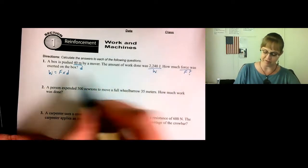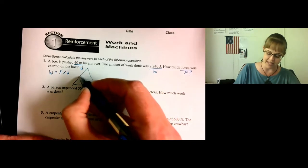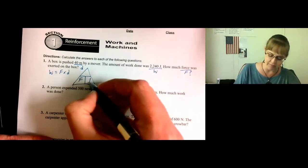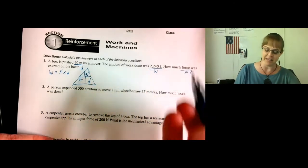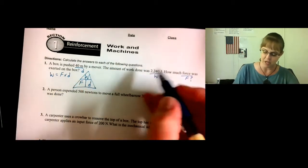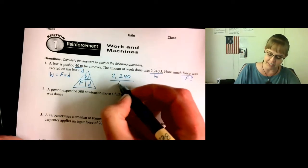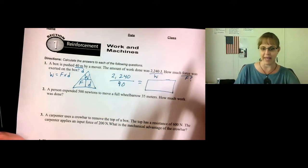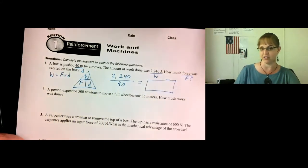Now, they've got you solving for force, so let's put this in a triangle. Force and distance are multiplied, therefore side by side. They go on the bottom. Force times distance. Work goes in the leftover blank. Now, we're solving for force. Cover up force, and it's work divided by distance. This is the only work you have to show.